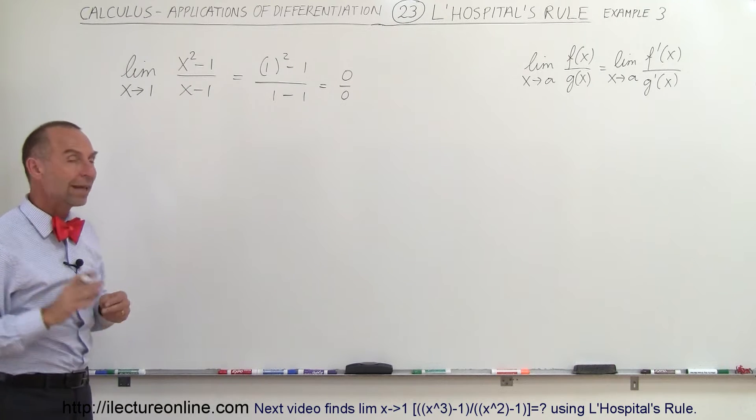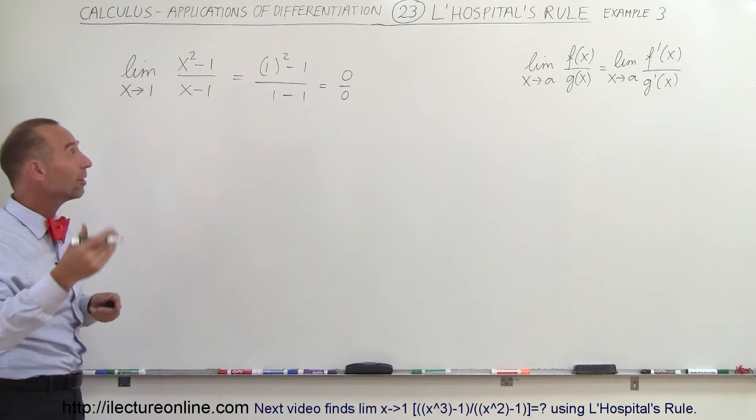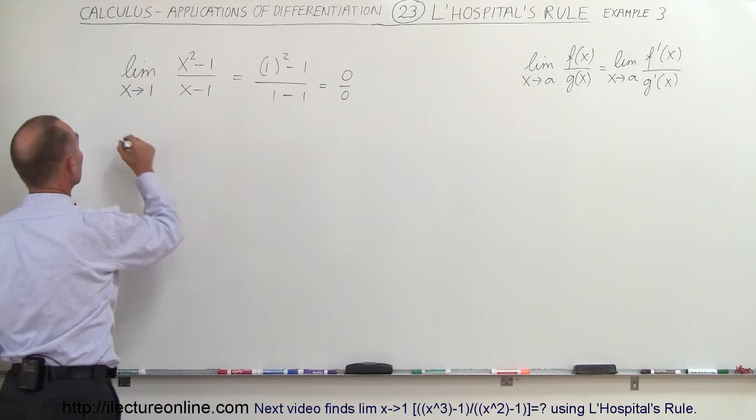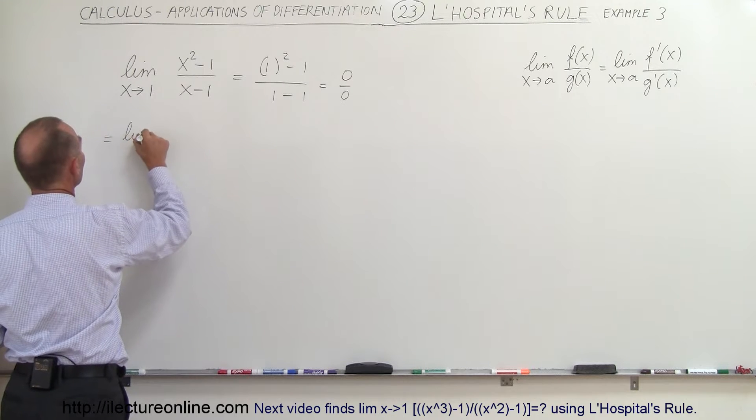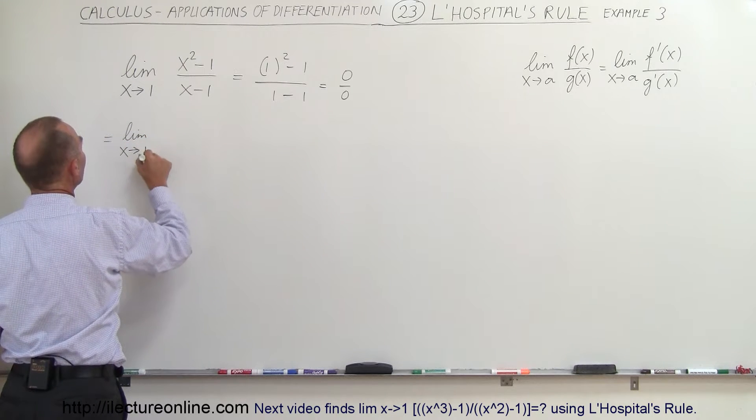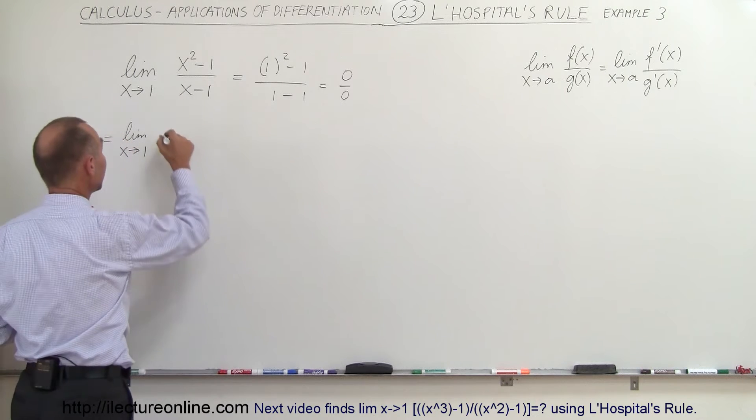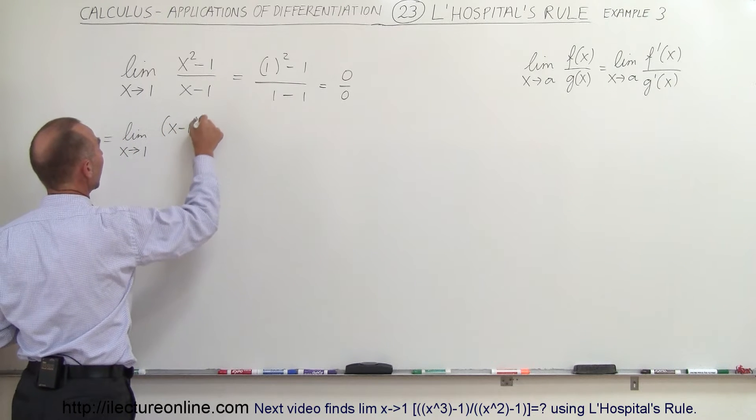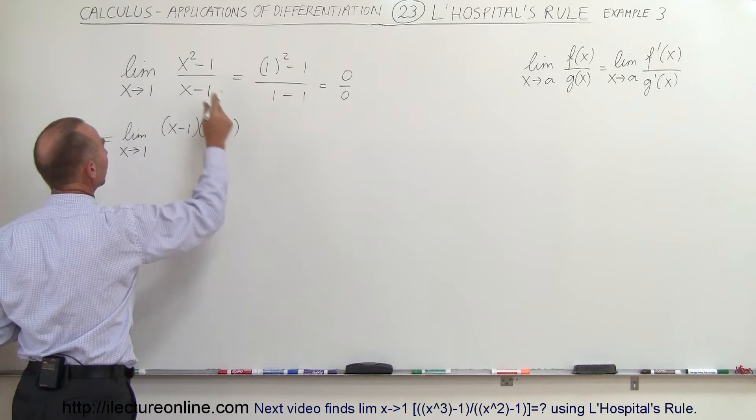But in this case you don't have to take the derivative of the numerator and the denominator. What you can do here is rewrite this as the limit as x approaches 1, and the numerator can be factored to x minus 1 times x plus 1, because after all it's a difference of squares, divided by the denominator x minus 1.